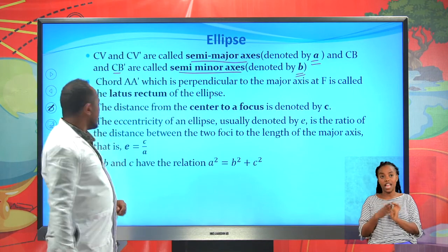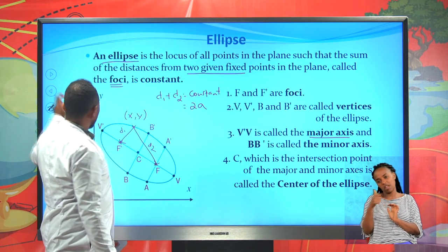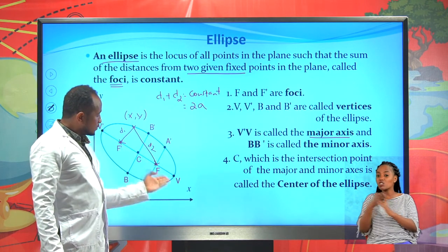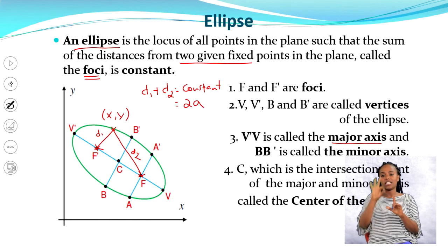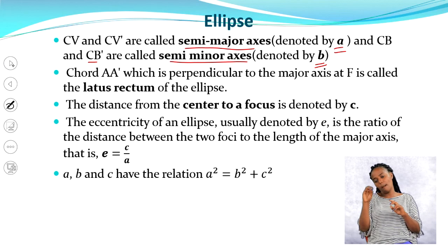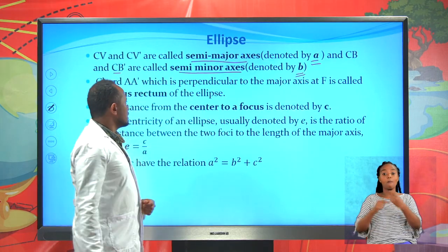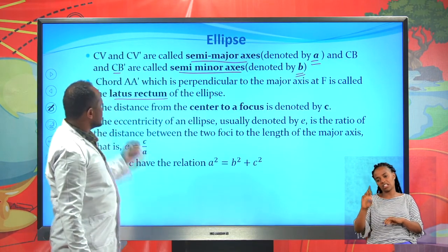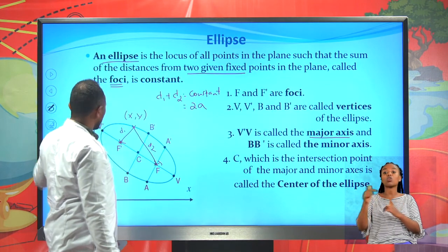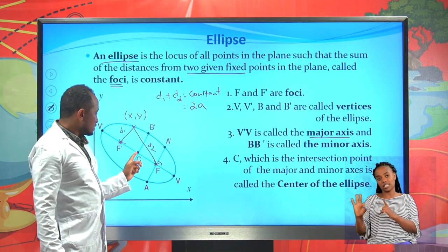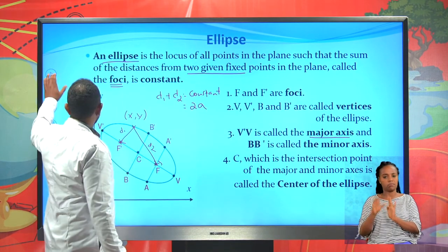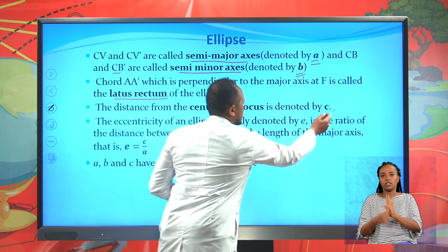The chord a, a prime which passes through the focus perpendicular to the major axis, we call it the latus rectum of the ellipse. The distance from the center to a focus is constant, and it is denoted by c.